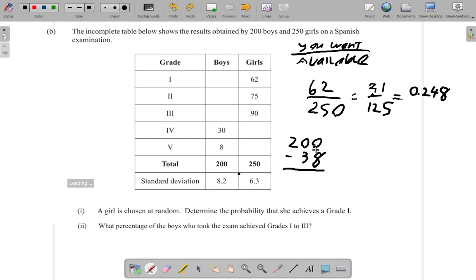200 minus 38 - you could do this with a calculator or by hand. 200 minus 30 is 170. That's 170 minus 8, which gives 162. So you have 162 of them who obtained grades 1 to 3.